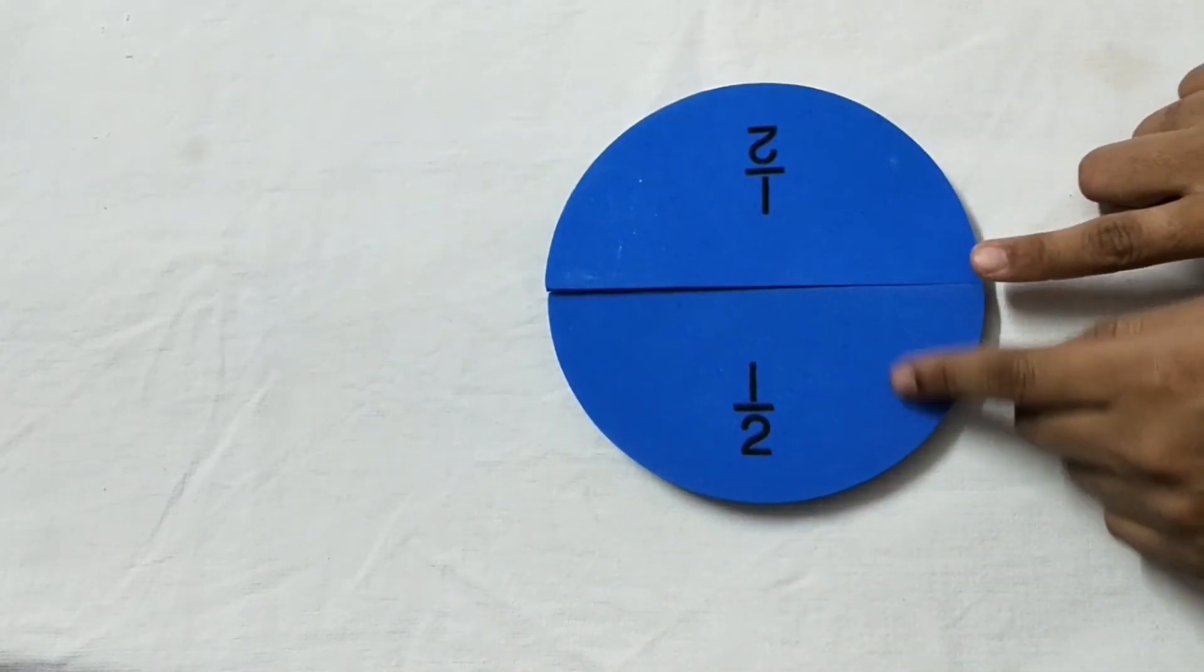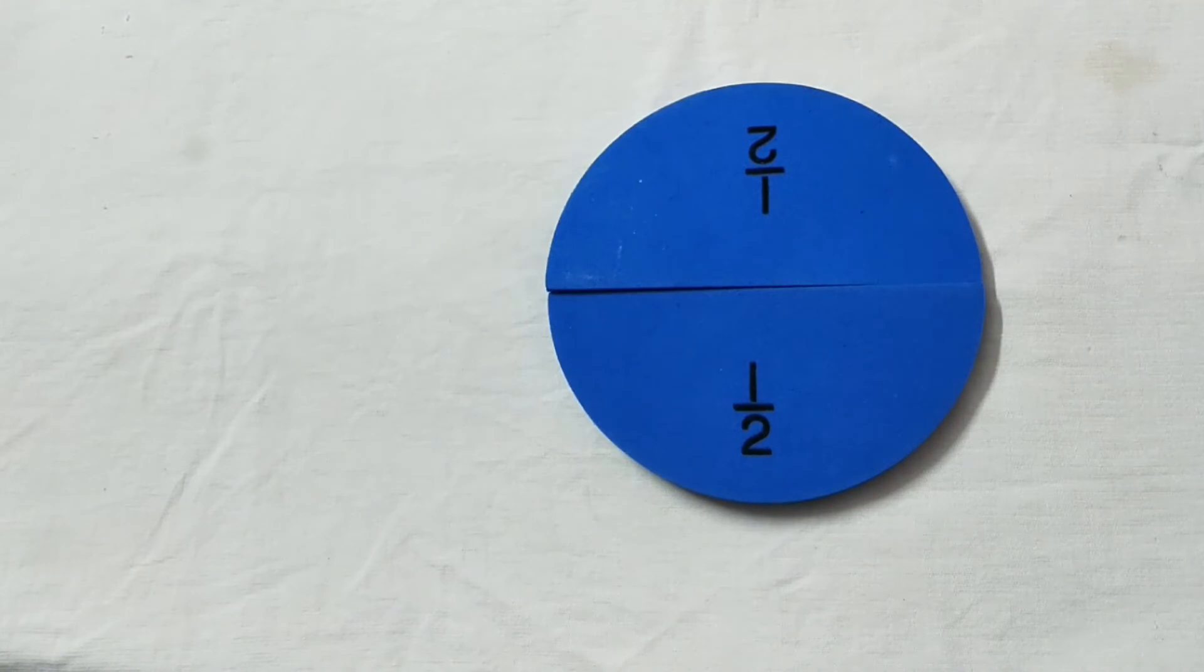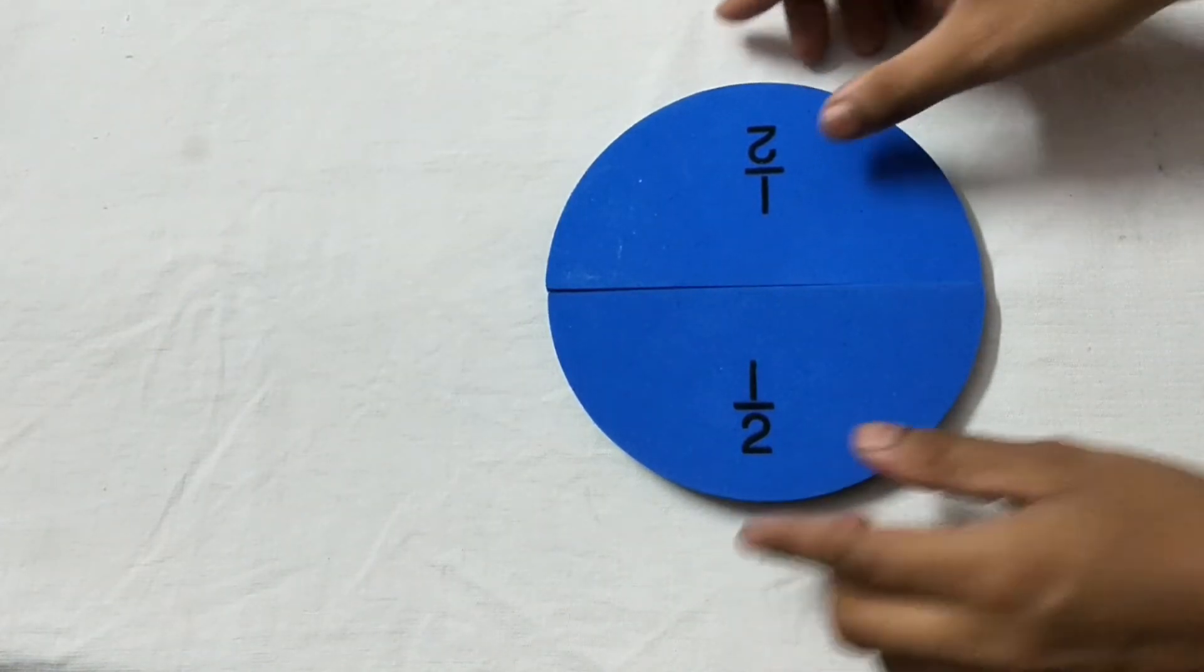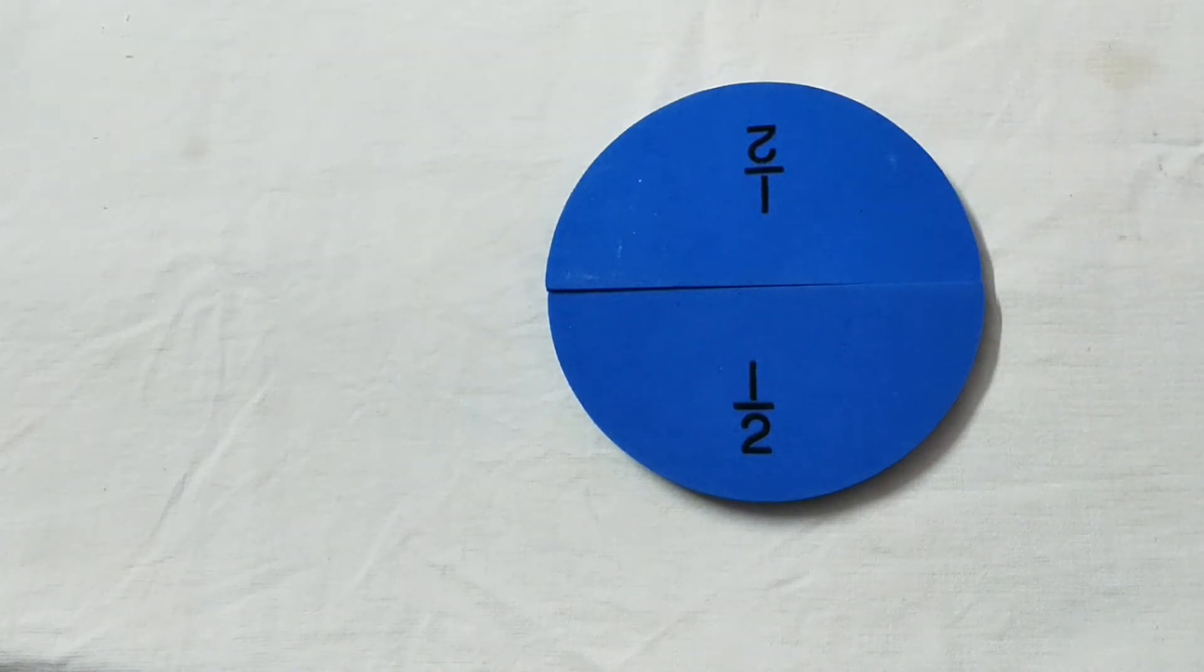Now see, from this crease line you can divide it into two equal parts. So see here, when two equal parts make two equal parts joined each other, at that time it makes one circle. So this is known as one half.